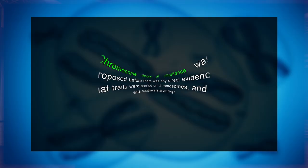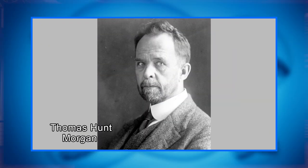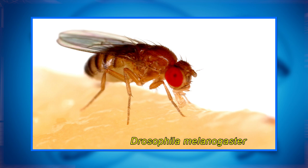His work helped pave the way for the discovery of heredity mechanisms. The chromosome theory of inheritance was proposed before there was any direct evidence that traits were carried on chromosomes, and it was controversial at first. In the end, it was confirmed through the work of geneticist T.H. Morgan and his students, who studied the genetics of fruit flies, that is Drosophila melanogaster.